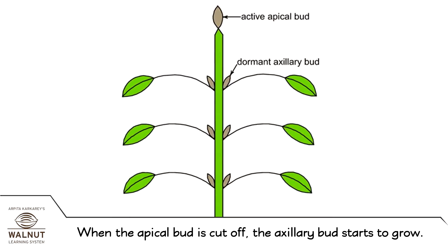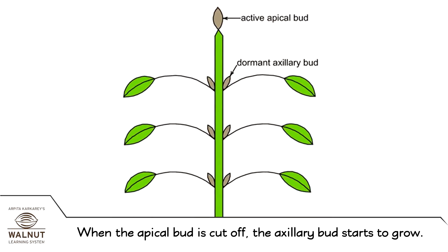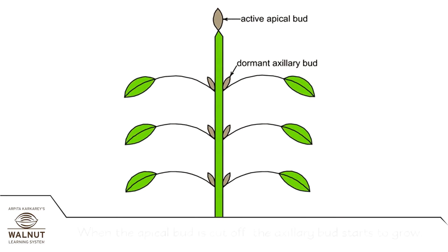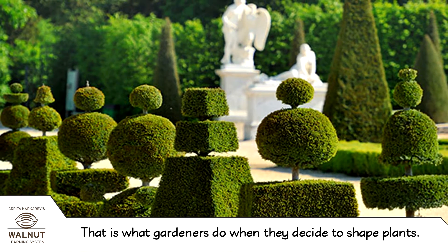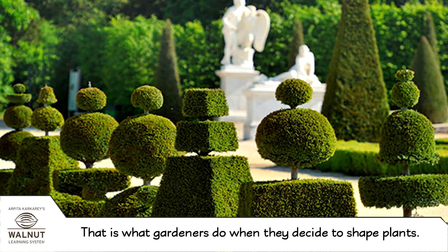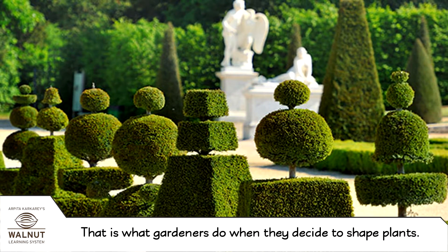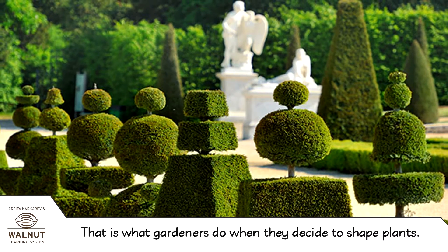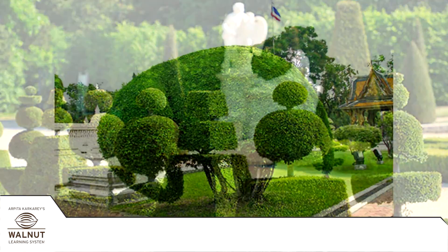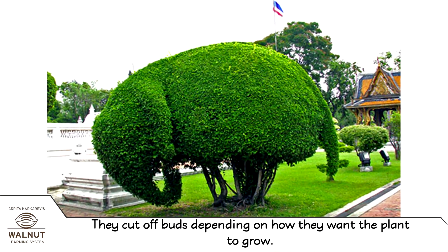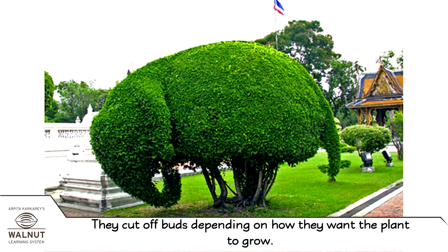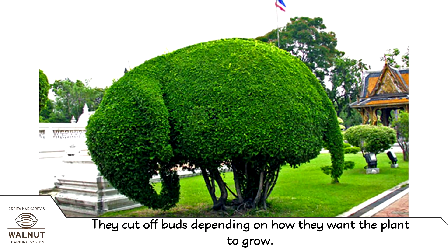The apical bud keeps on growing and makes the plant taller and taller. When the apical bud is cut off, the axillary bud starts to grow. That is what gardeners do when they decide to shape plants — they cut off buds depending on how they want the plant to grow.